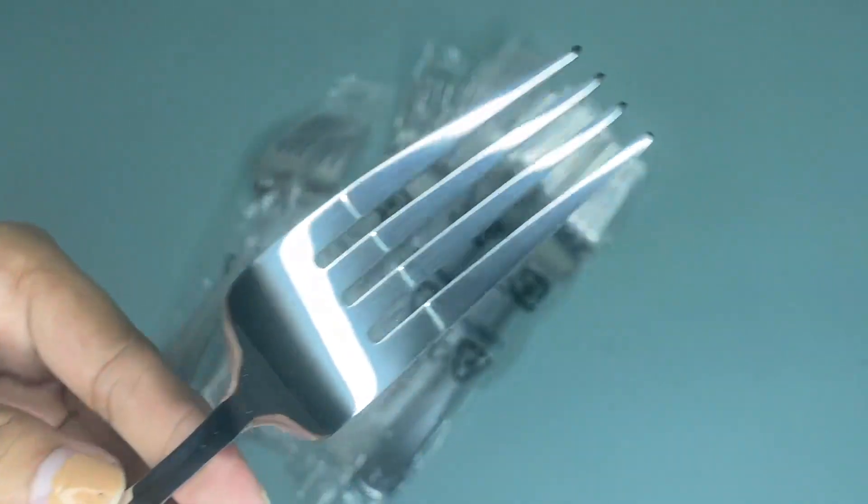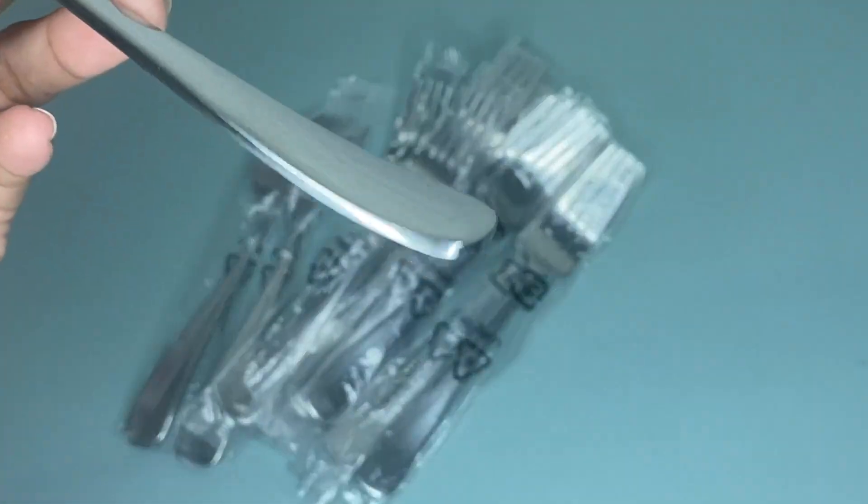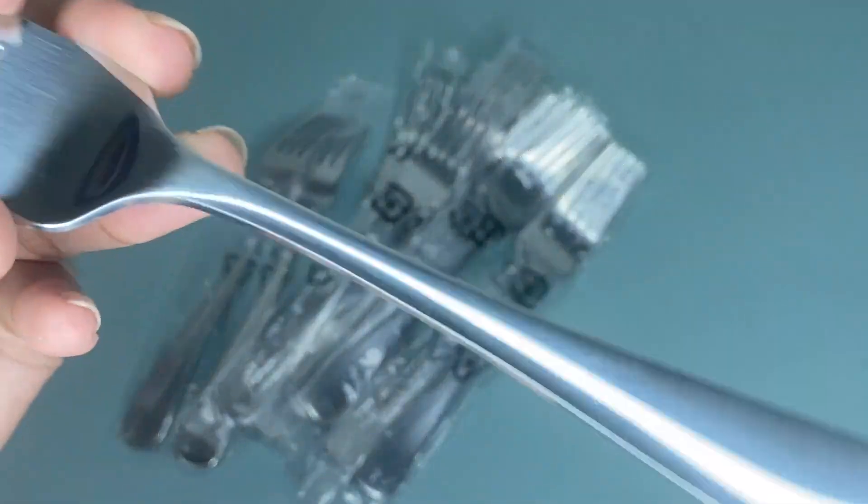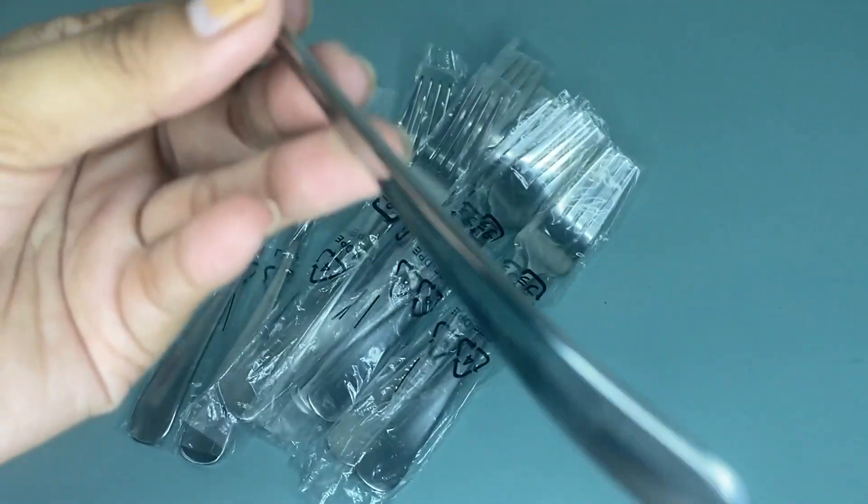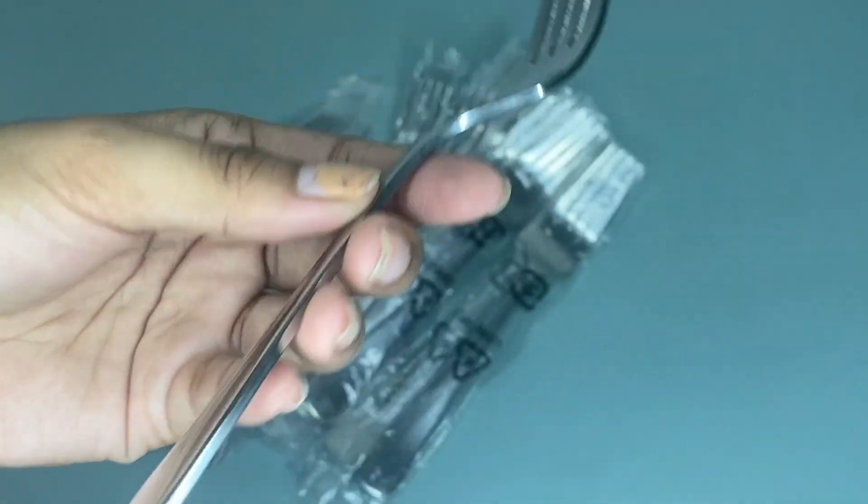This is perfect for the dining room, kitchen, or even restaurant use. That's why I recommend this Amazon Basic Stainless Steel Dinner Forks with Round Edges because it's perfect for everyday use and a must-have for your kitchen.